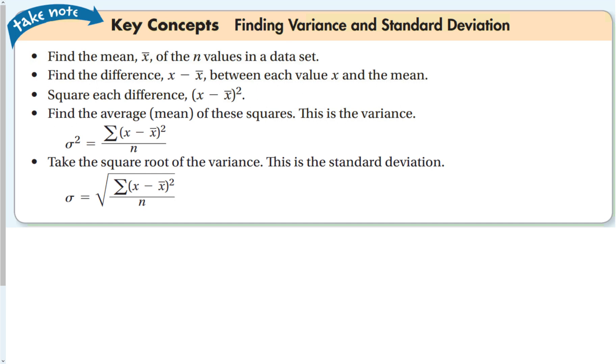There are a couple formulas we're going to use to find the variance and standard deviation. First, we find the mean, x bar, of all the values in the data set. Remember, to find the mean you take all the data, add them up, and divide by the number of data points.